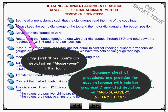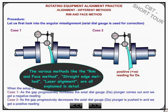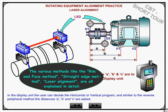The exact procedure for each method is broken down into easy-to-remember steps. In the functional package, you would be able to place your mouse over each step for more detailed information. Methods such as the rim-to-face method, straight edge method, and laser alignment are all explained in detail.